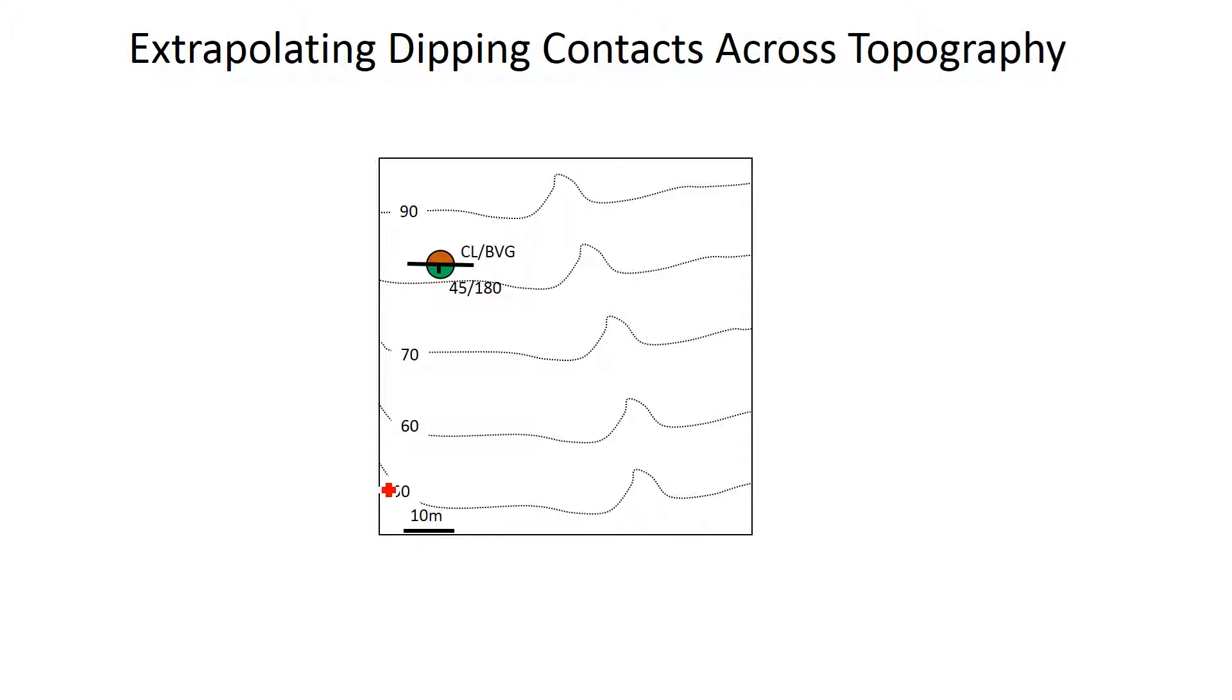This is based just on the knowledge of where the location of that contact is in one place and also knowing something about it. The focus of this video is also going to be we don't need to have our location of our contact here actually on a topographic contour. This might have been the case in some of the cartoon examples that you've been doing in classes, but in the real world only occasionally does the location of a contact that you've defined happen to also be exactly on one of these topographic contours.